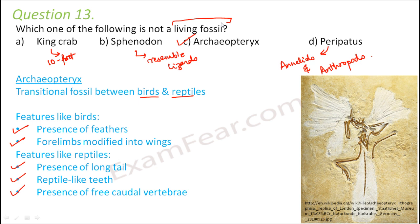So king crabs, sphenodon, and peripatus are all examples of living fossils. But archaeopteryx is not a living fossil — it is a transitional fossil which acts as a connecting link between birds and reptiles.